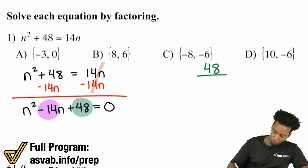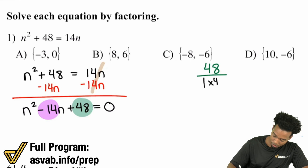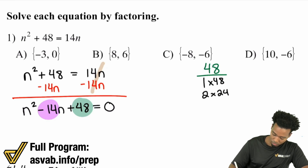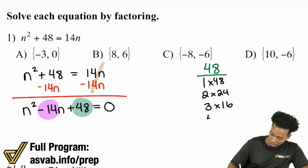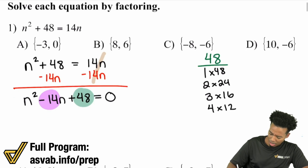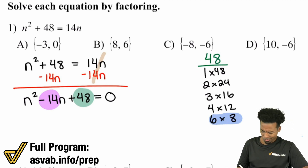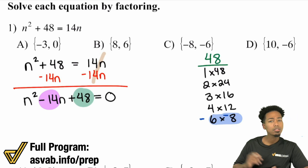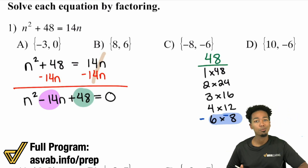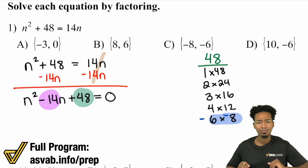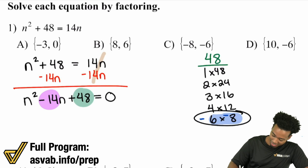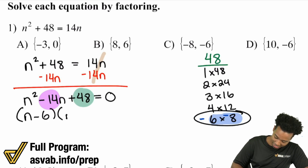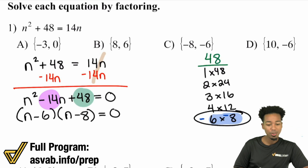What are the factors of 48? We've got 1 times 48, 2 times 24 — those don't add to 14. We have 3 times 16 — those don't add to 14 either. We have 4 times 12 — that's 16, not 14. What about 6 times 8? That'll work — 6 plus 8 is 14. So negative 6 plus negative 8 is negative 14, and both being negative multiplies to a positive 48. We are good.